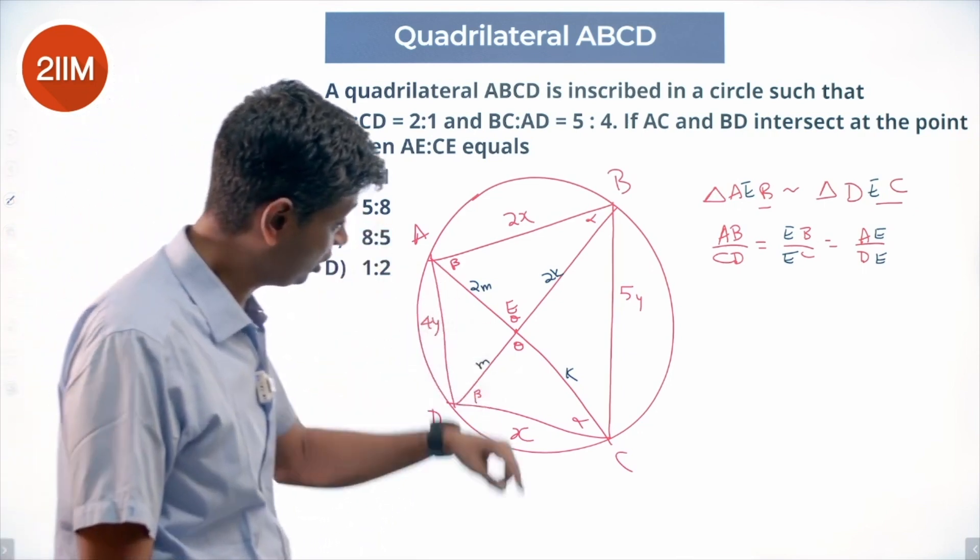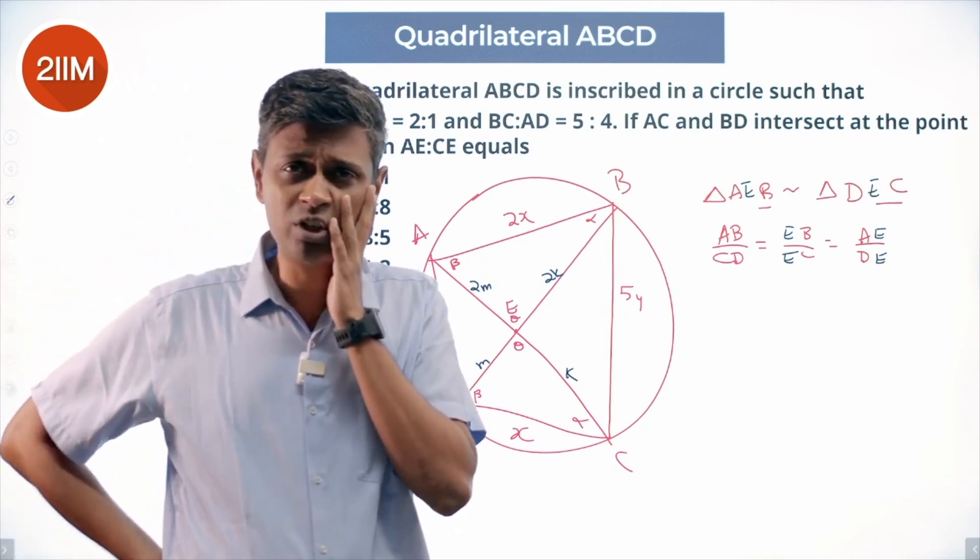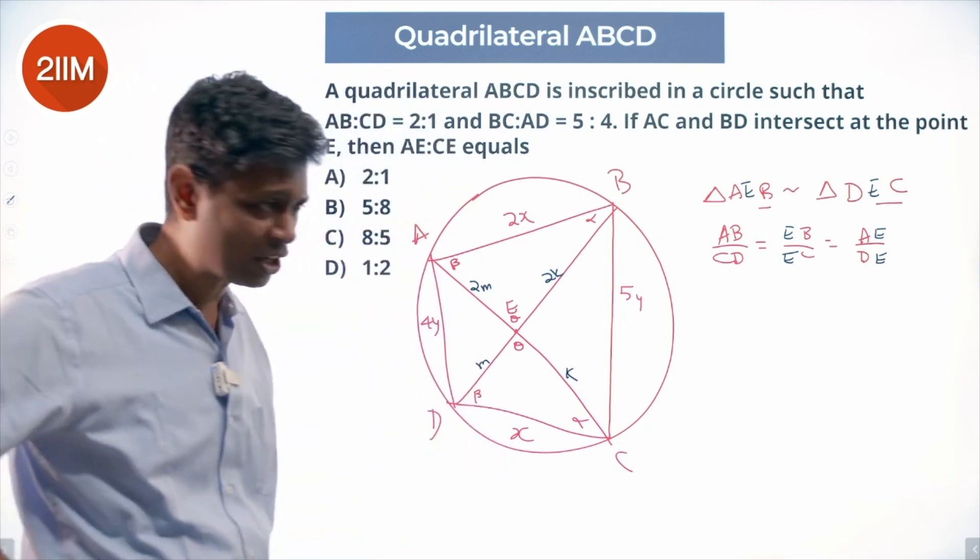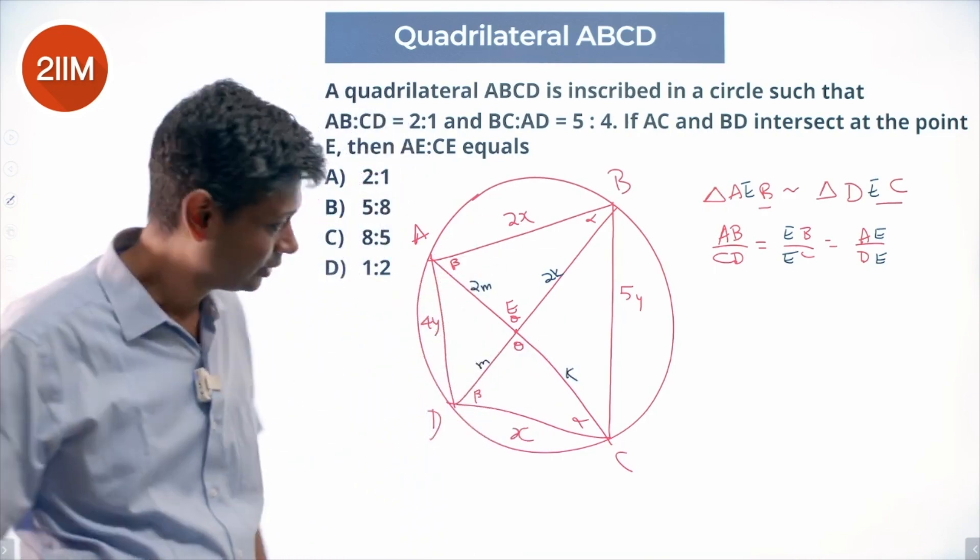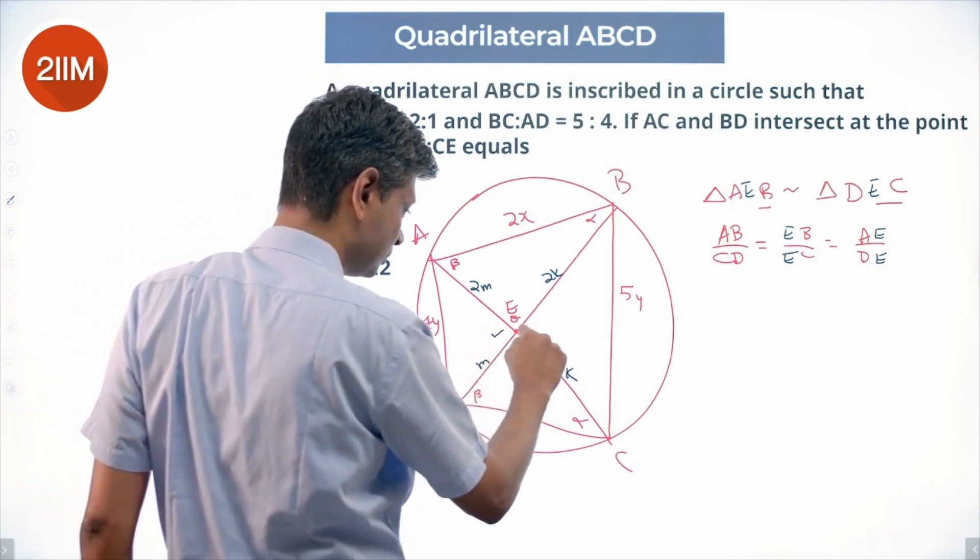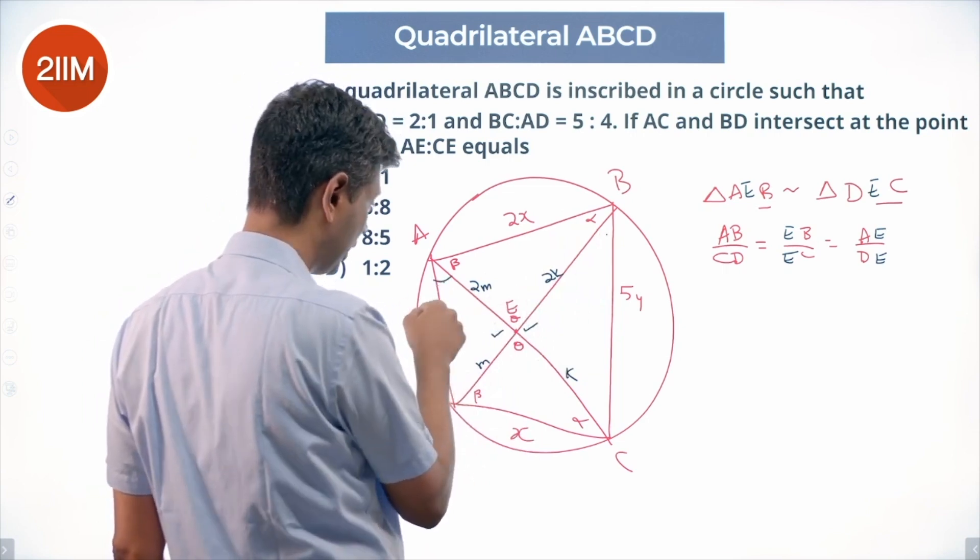We want to find AE:CE, which is 2M:K. We still need to link M and K, which is a pain, right? But not so much of a pain because if these two are similar, these two fellows should also be similar since these angles are equal.